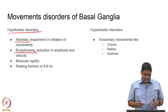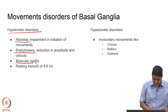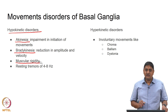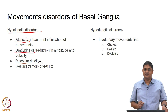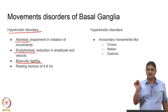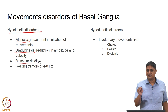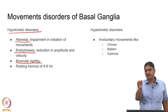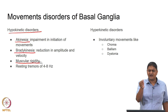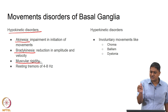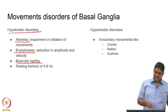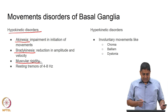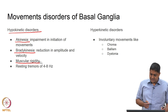Then there is rigidity, which may be of multiple types. Importantly, in the case of Parkinson's disease, there are also tremors. This is something you may have seen in relatively older people — they do this rubbing of the index finger and thumb tip with each other. This is the characteristic resting tremor of Parkinson's disease.